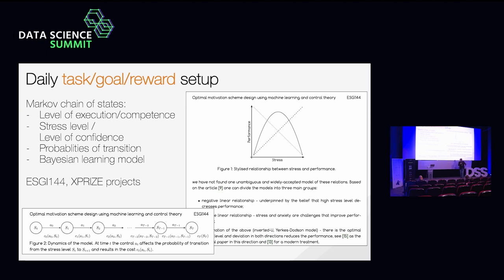Of course, the highest stress levels lead to very negative outcomes we want to avoid, like people leaving work, burnout, and so on. So this is how we plan for the next task — its difficulty level and the appropriate reward.